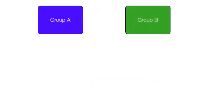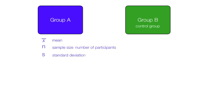Imagine we have group A and group B. Group B is our control group. We calculate the mean, the sample size or number of participants, and the standard deviation for both the control group and group A, which is our experimental group.